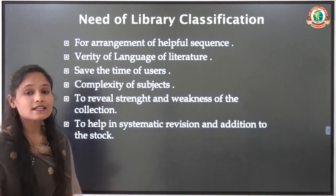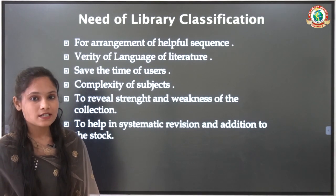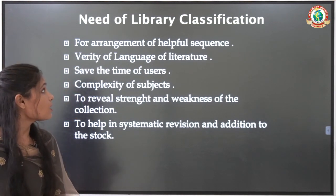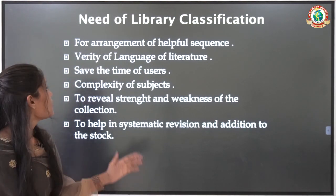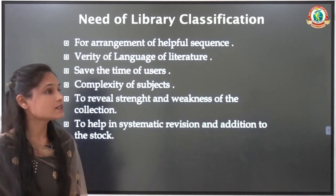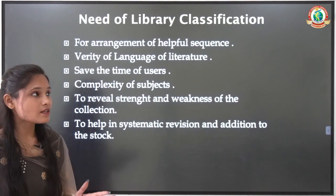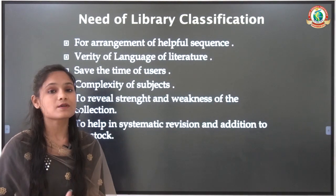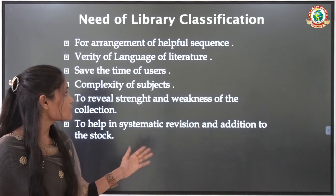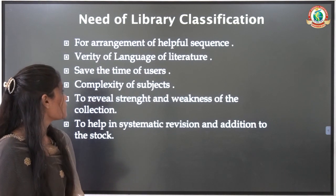Now, why do we need library classification? Every activity has a need. For example, arrangement in a proper sequence: if books are arranged in a proper manner, it will be easy to find any book and provide it to the user. Variety of languages and literature: in a library there is different type of literature, and if it is arranged in a proper manner, retrieval becomes very easy, and it saves the time of users.